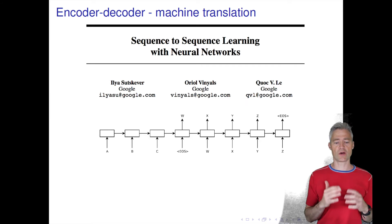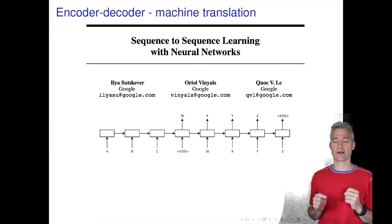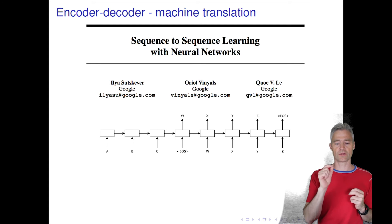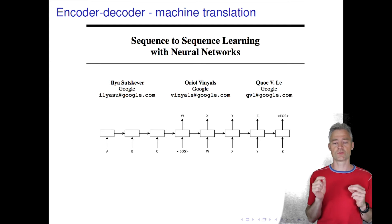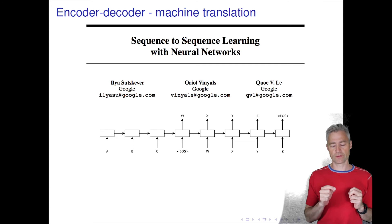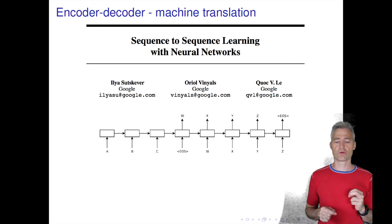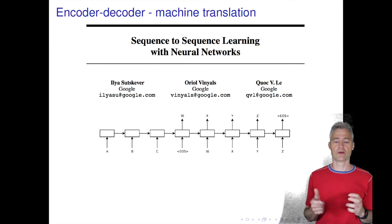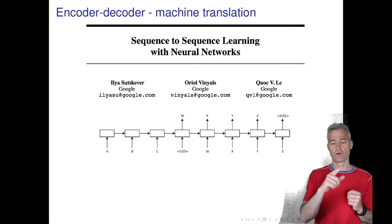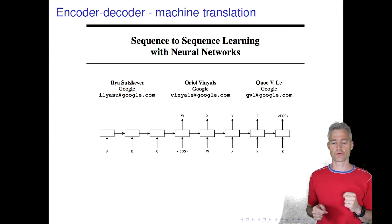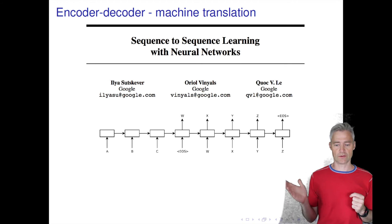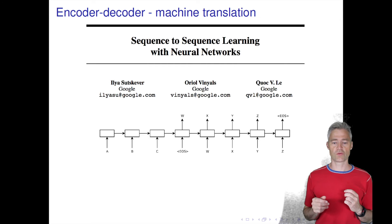What is shown here is a cartoon of a sentence ABC in English. There is also a tag that tells the network it is done reading the input sequence. When it sees the end-of-sequence tag, it is told to start decoding, and it then decodes a sentence in — say French — consisting of words W, X, Y, Z. Finally it spits out an end-of-sequence tag indicating it has completed its translation.